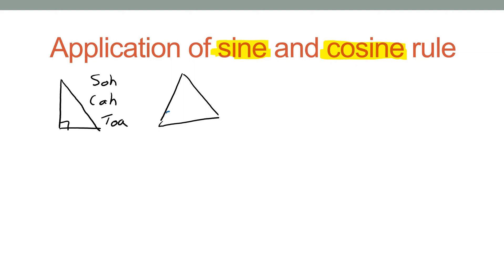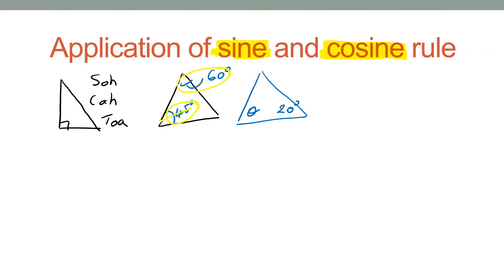For a non-right-angle triangle, if it gives you more than one angle — say 45 degrees and 20 degrees — that counts as two angles, so you use the sine rule. The rule is: sine A over a equals sine B over b. If you are looking for the side length, you just flip it: a over sine A equals b over sine B.